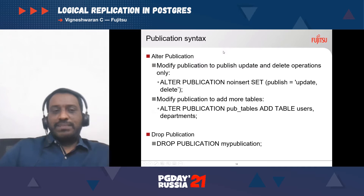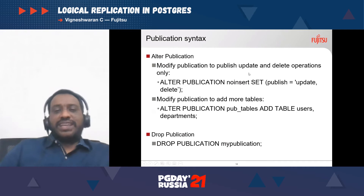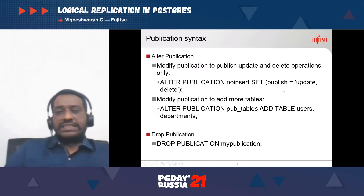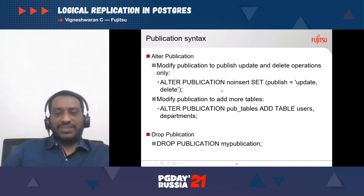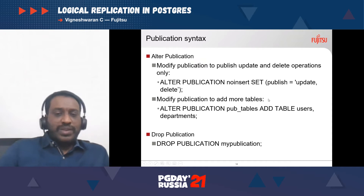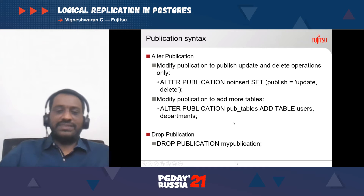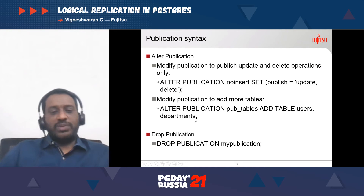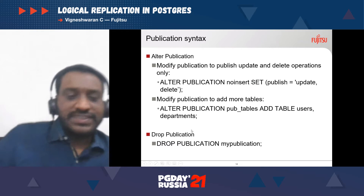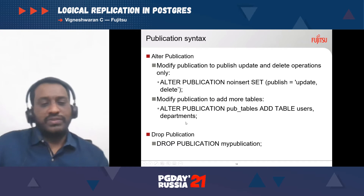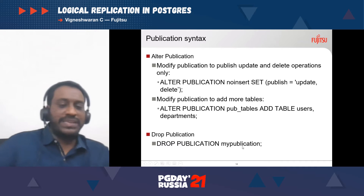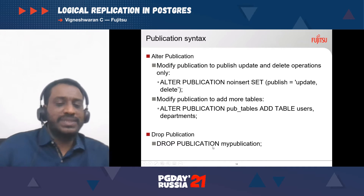Once you have created a publication, you can change it. To change it to publish update and delete operations: `ALTER PUBLICATION publication_name SET publish = 'update, delete'`. To add more tables: `ALTER PUBLICATION publication_name ADD TABLE table_name`. Once you no longer need logical replication, simply drop the publication: `DROP PUBLICATION publication_name`.